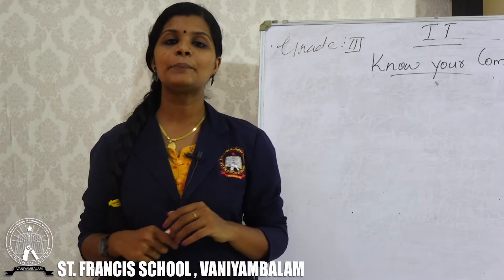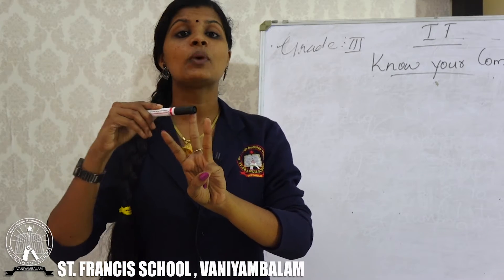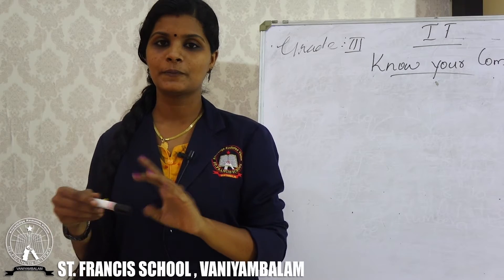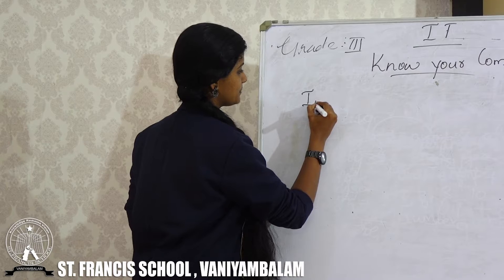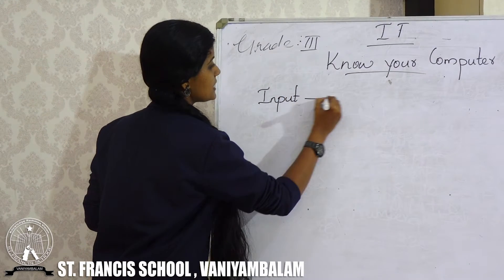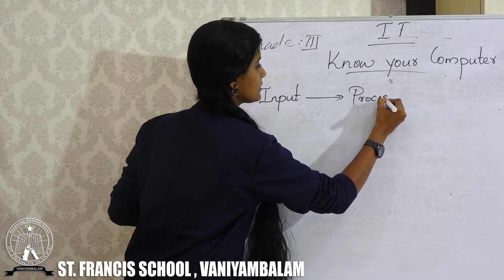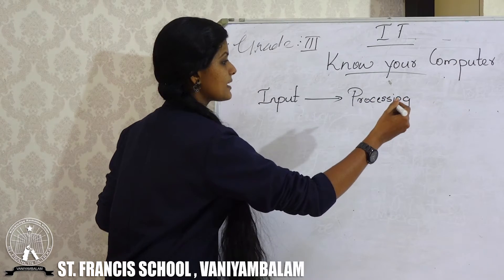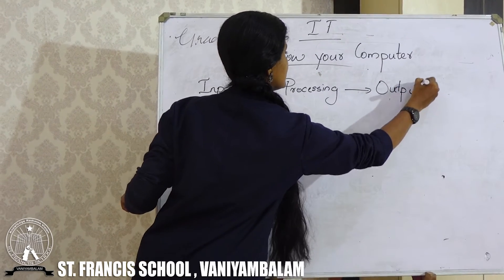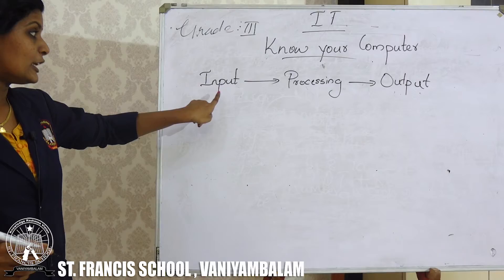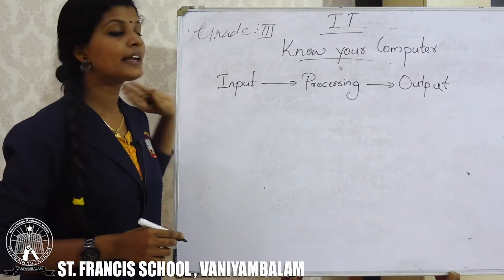In a computer, there are three steps involved. The first one is input, the second one is processing, and the third one is output. Input, processing, output — this is the way a computer works.